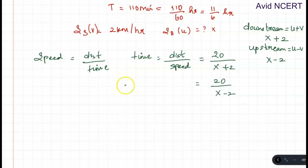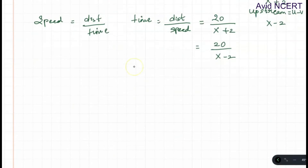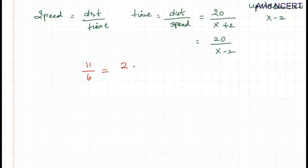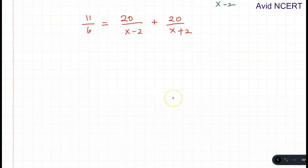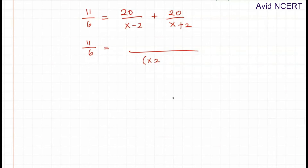From the question, the total time for both upstream and downstream is 110 minutes, which is 11/6 hours. So we write the equation: 11/6 equals 20 divided by (x minus 2) plus 20 divided by (x plus 2). Simplifying this will give us the value of x, which is the speed of the boat in still water.